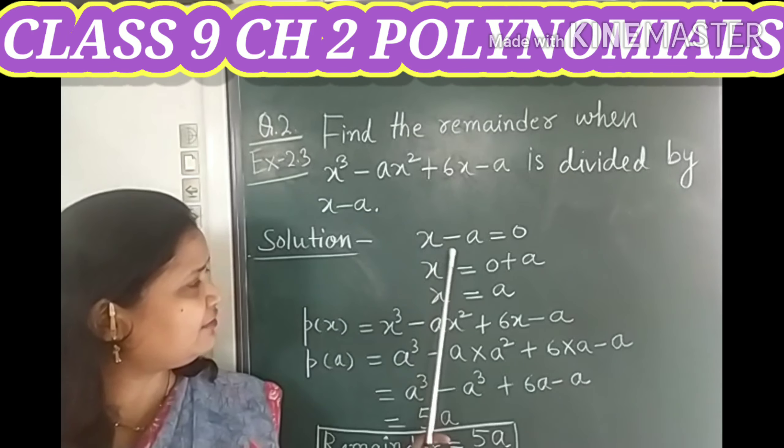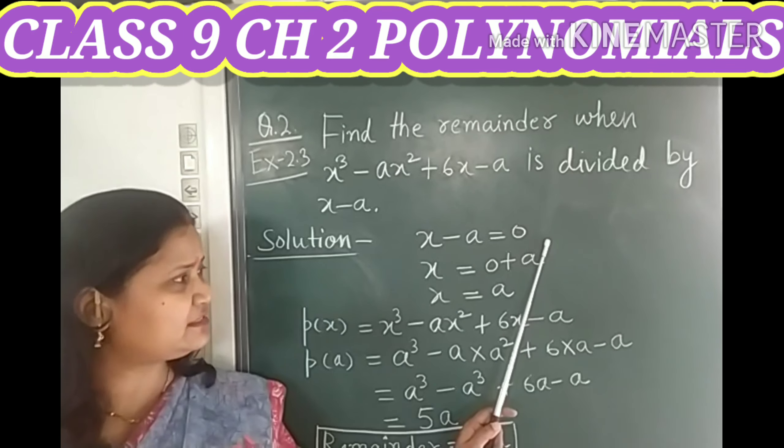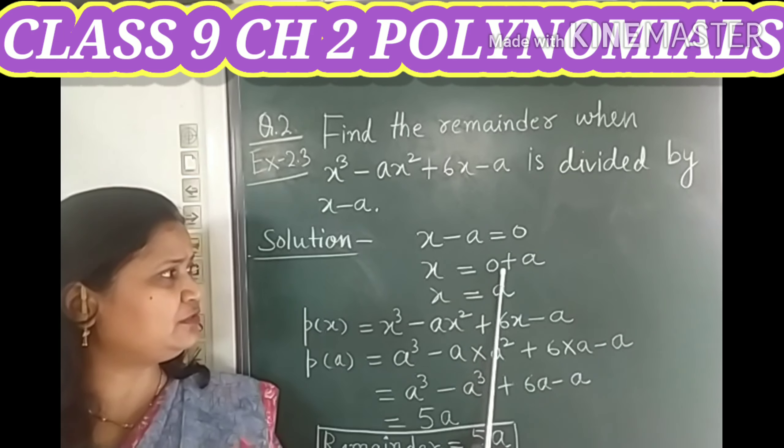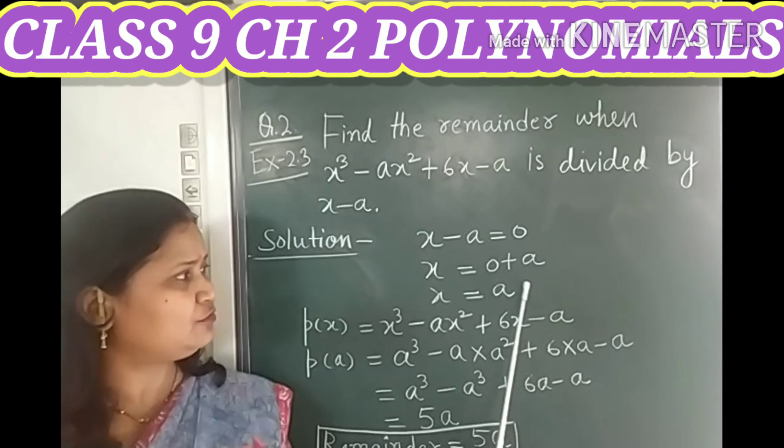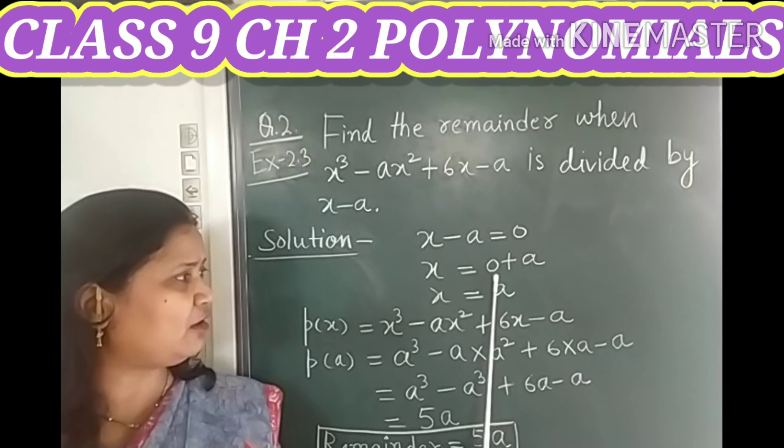So in order to find the value of x, I will move this minus a to the right side and our expression becomes x = 0 + a. So children, now using the additive identity of 0,